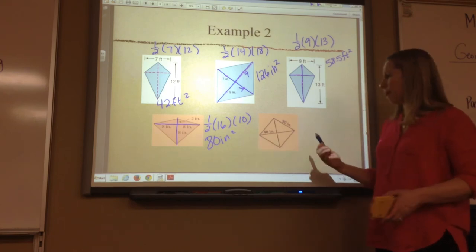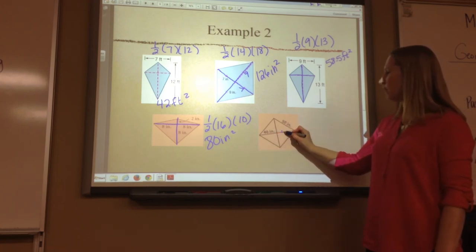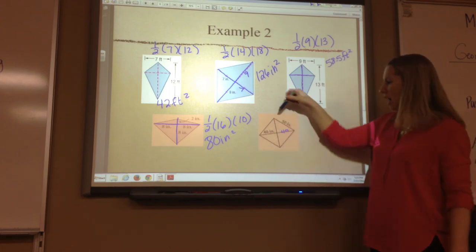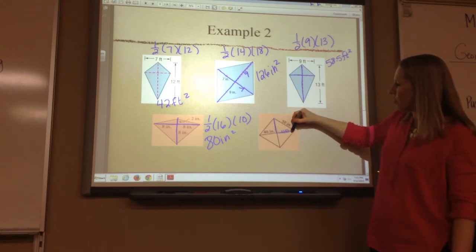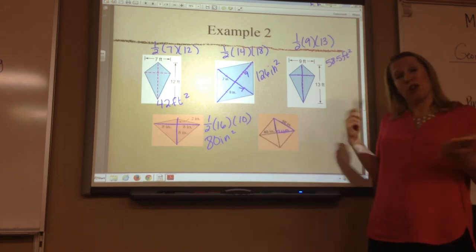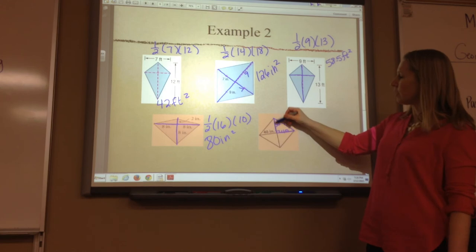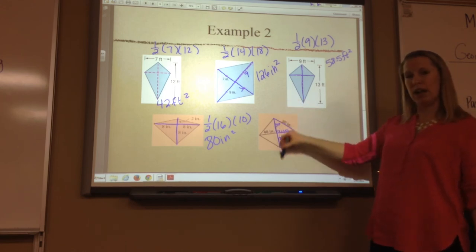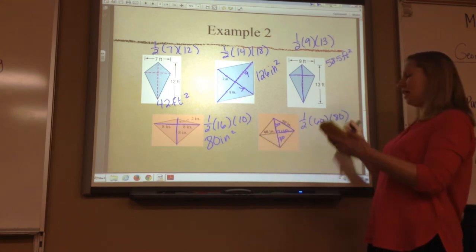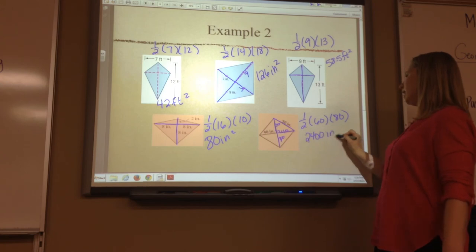Now I know for sure this one's on your assignment. I know that this length is forty, and on a rhombus diagonals bisect each other, so this would also be forty, making that entire diagonal eighty. I need to figure out the other diagonal — this is a right triangle, so you can do Pythagorean theorem. Or, this is a triple — it's a 30, 40, 50. So this is thirty, which makes this thirty, so this diagonal is sixty. One-half sixty times eighty — sixty times eighty divided by two — twenty-four hundred inches squared.